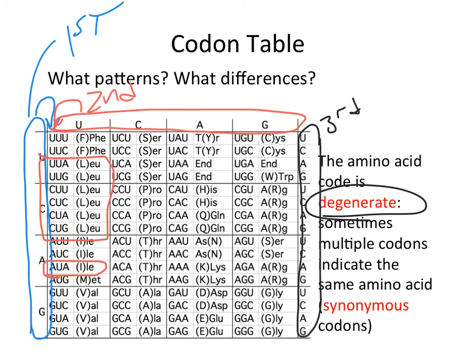Leucine has a whopping six codons, all of which stand for one amino acid. Arginine also has six — which is how you remember its single letter code is R. Serine has six as well, split across the table. Note the pattern: what's typical about codons that encode the same amino acid is that the first two letters tend to be the same. The first and second positions tend to be the same; the third position often differs.